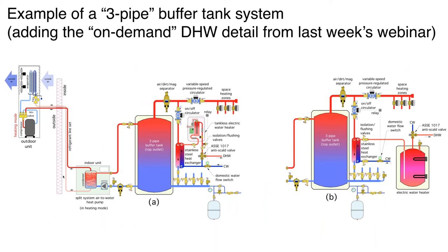Here is a similar idea. We've got a four-pipe buffer — this could be, for example, the Argosy tank — where we're feeding with a heat pump. We're pulling the cool water out of the bottom and going into our heat pump. I like to always have a dirt separator of some sort in there. Today, with high-efficiency permanent-magnet rotors in circulators, I like a magnetic dirt separator, and there are several of those on the market. What that's going to do is clean up the flow if there's any dirt or magnetic particles in it before they go inside the heat pump.